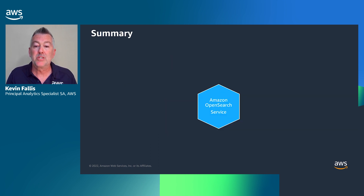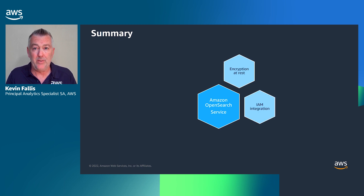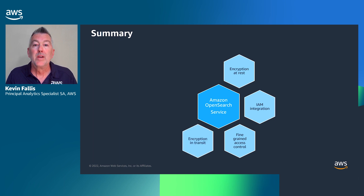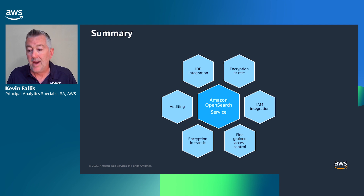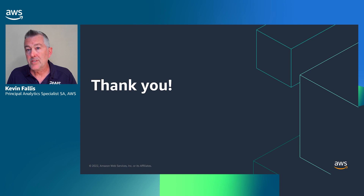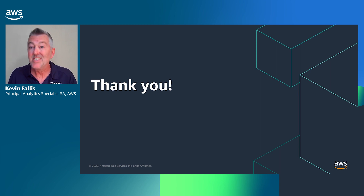In summary, the Amazon OpenSearch service supports: encryption at rest, IAM integration, fine-grained access control, encryption in transit, auditing at both the control plane and the data plane, and IDP integration with your favorite provider for single sign-on activities. Thank you so much for your time today. I know your time is valuable and we really appreciate your interest in the Amazon OpenSearch service. Hopefully this information has enabled you with the details you need to explore further. Thank you.